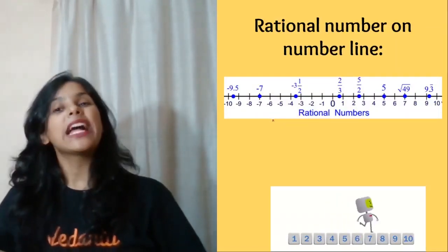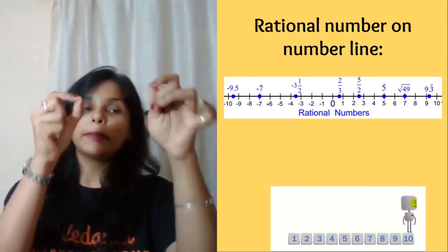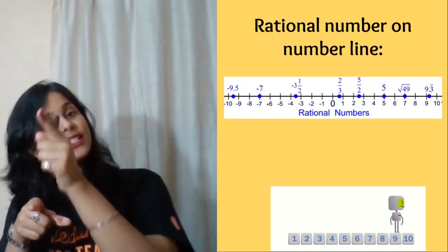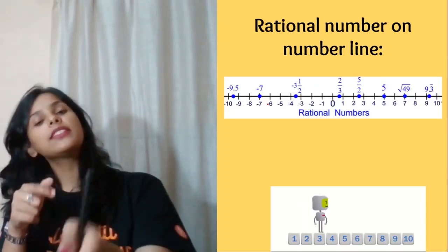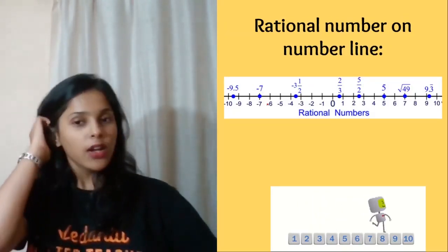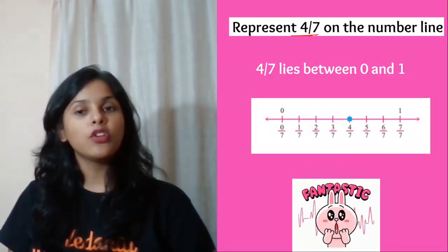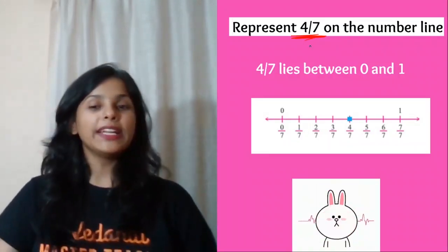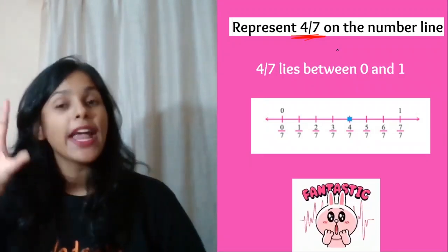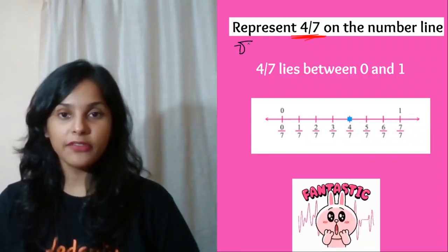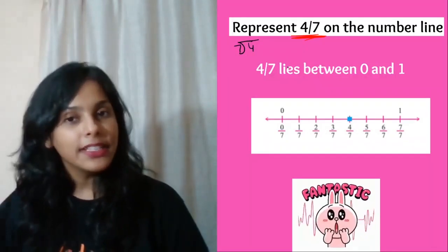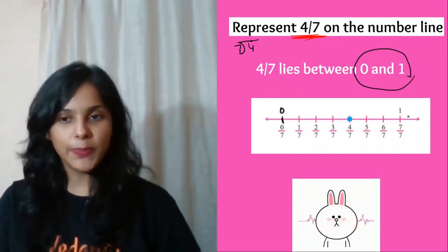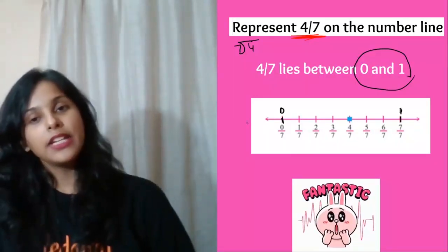Rational numbers on a number line means placing the number on the number line. Walking right means increasing numbers; walking left means decreasing. To plot 4 by 7 on the number line: 4 divided by 7 gives 0-point-something, so it lies between 0 and 1. Place 0 and 1 on the number line with some space between them.